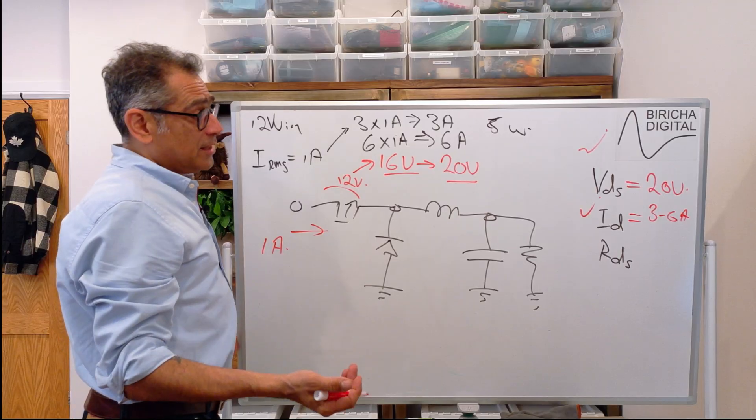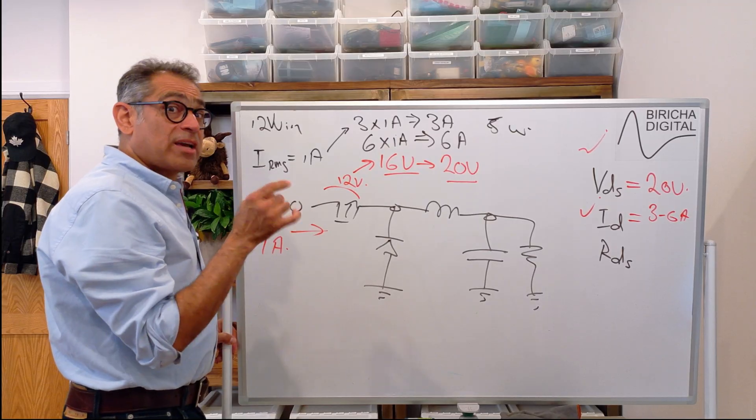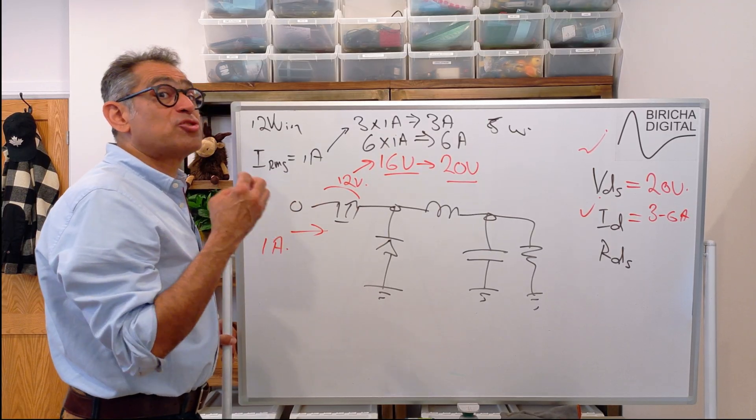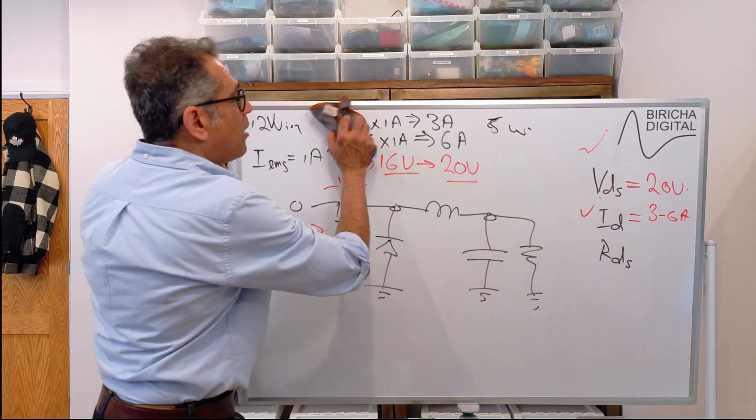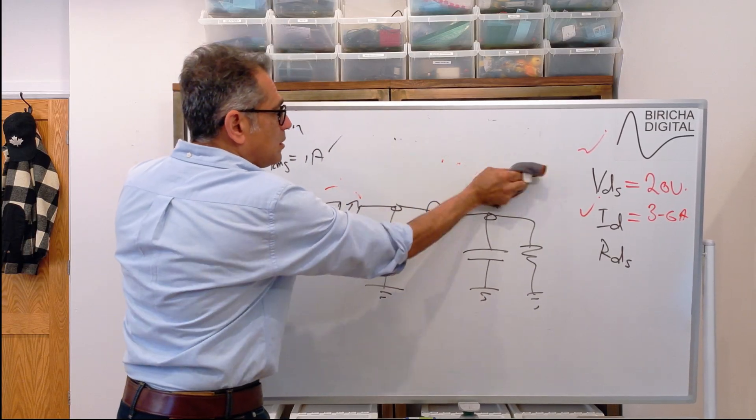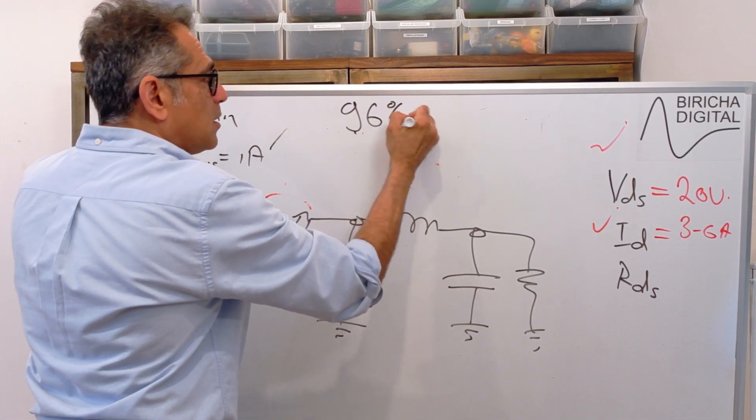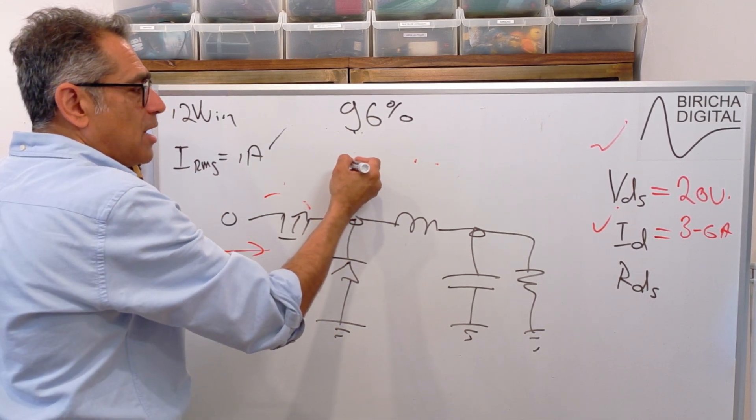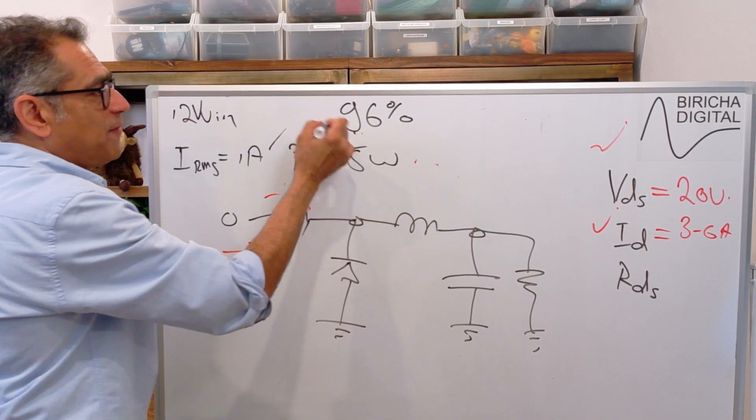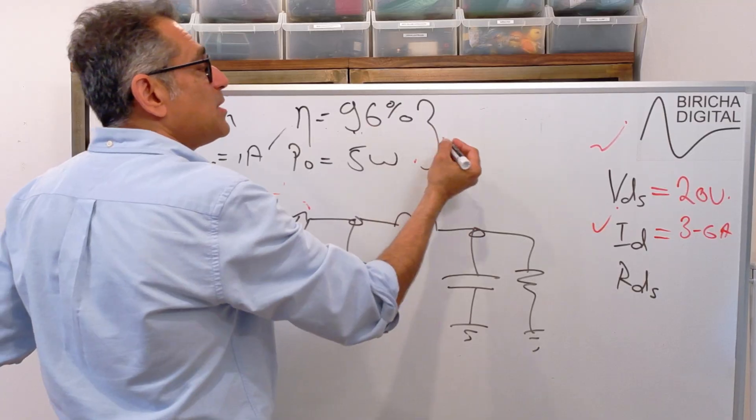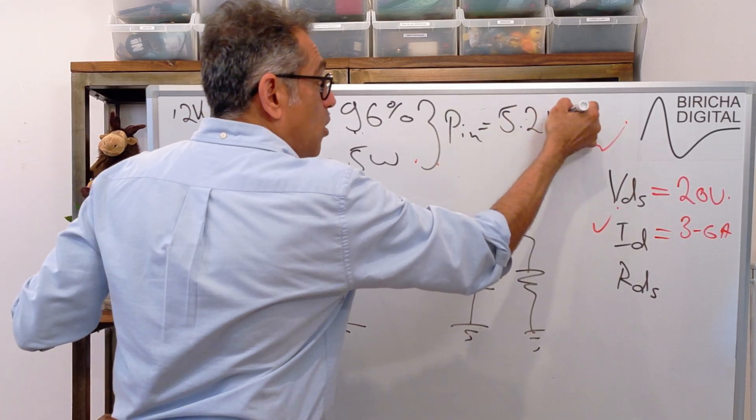The final thing that I need to work out is my RDS. And for that, I need to know my conduction losses. Remember, for this small power supply, I'm trying to avoid calculating the switching losses. For simplicity, let us say that our efficiency for this power supply, as per our specification, is going to be 96%. We said that the output power was 5 watts. That's P out. So with an efficiency of 96%, that means that my input power, P in, will have to be around 5.2 watts.